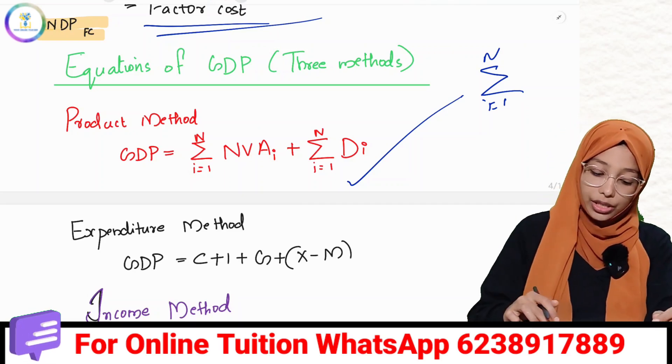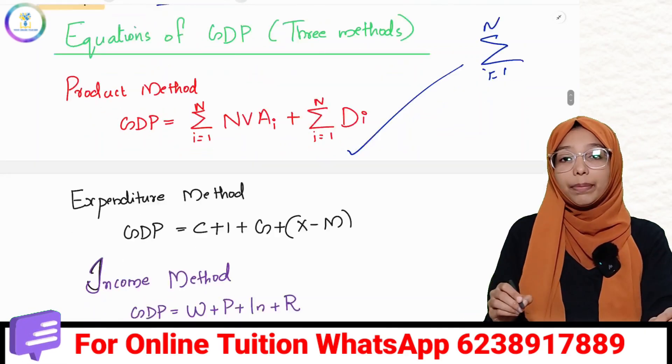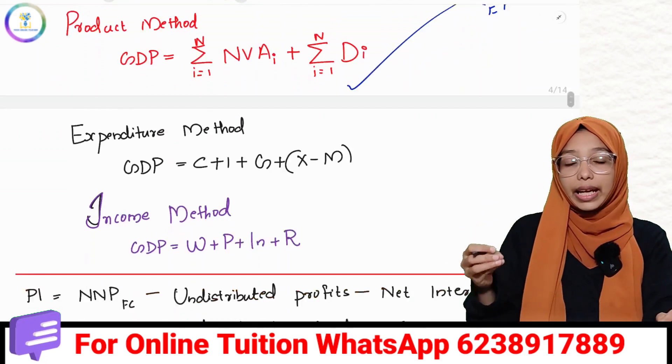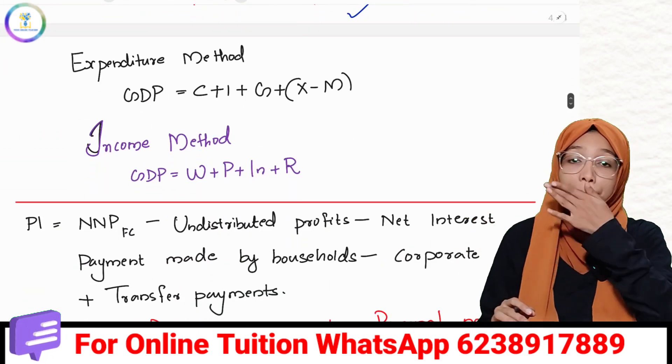GDP by the expenditure method is C plus I plus G plus X minus M. The income method is W plus P plus IN plus R.